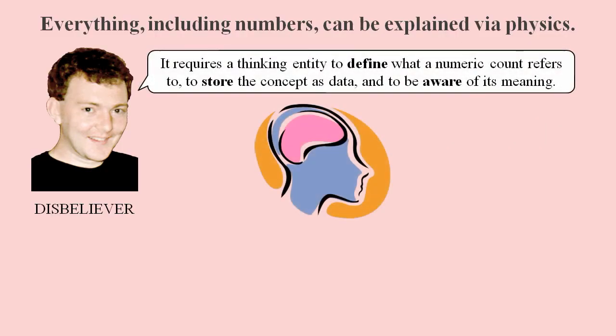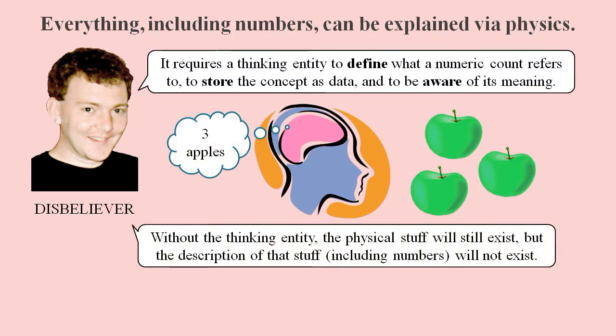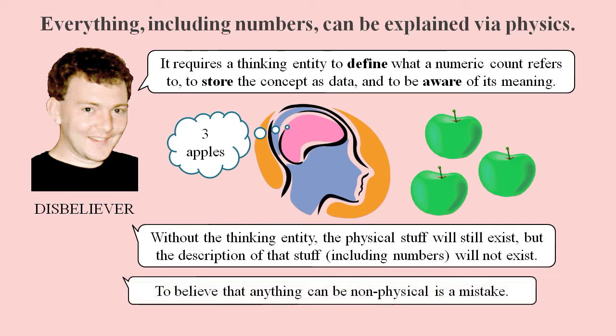If numbers exist in brains as the quantity part of descriptions, then it would be a mistake to believe their existence is somehow dependent on consistency, or that we can say infinitely many of them exist.